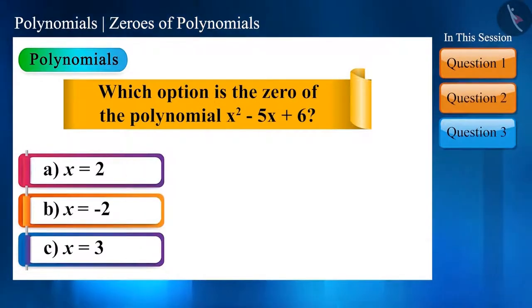Let us now take the next question. From the given options, which one will be the zero of the polynomial x square minus 5x plus 6? By the way, this is a very easy question. All the values of x need to be put one by one to find for which value of x the polynomial becomes 0.